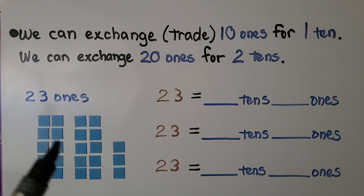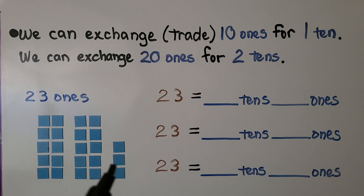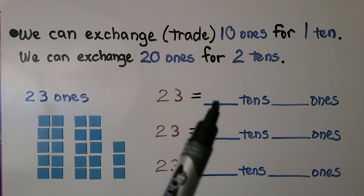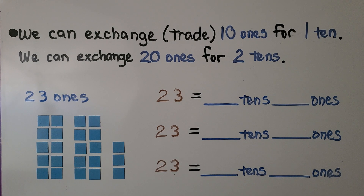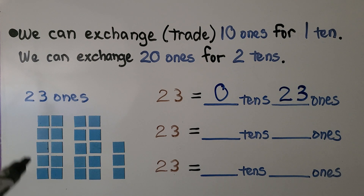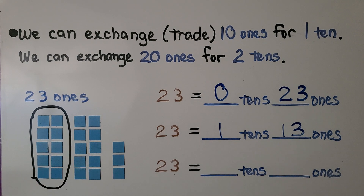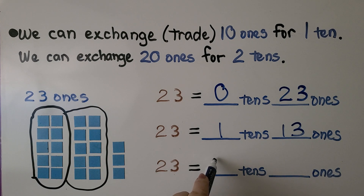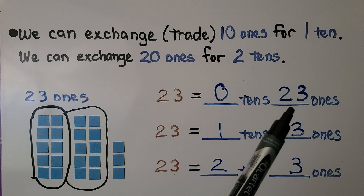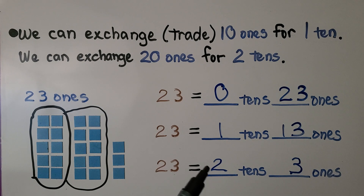Here we have 23 ones. That's 10, and 10, that makes 20, and three more. We can write it as zero tens and 23 ones because we have no strips of tens. We can also group this as a 10 and have one 10 and 13 ones. We can also exchange those 10 ones for another 10. Now we can say we have two tens and three ones. So 23 is zero tens and 23 ones, or one 10 and 13 ones, or two tens and three ones.